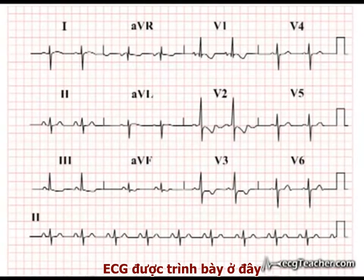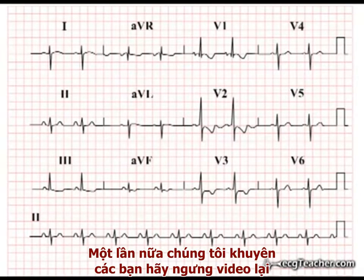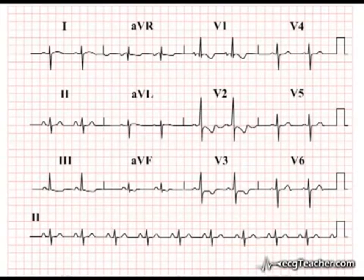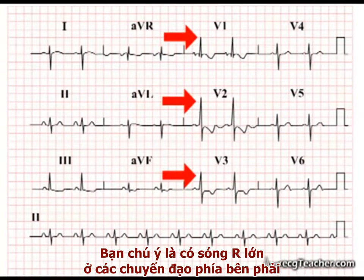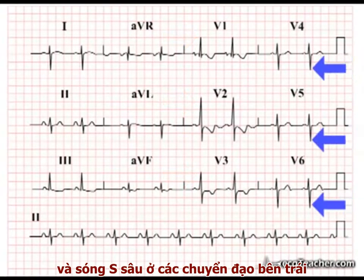The ECG shown here is from a patient with chronic pulmonary hypertension. We would invite you to stop the video at this point and analyze the changes present. You will notice the prominent R waves in the right-sided chest leads and significant S wave activity in those on the left.